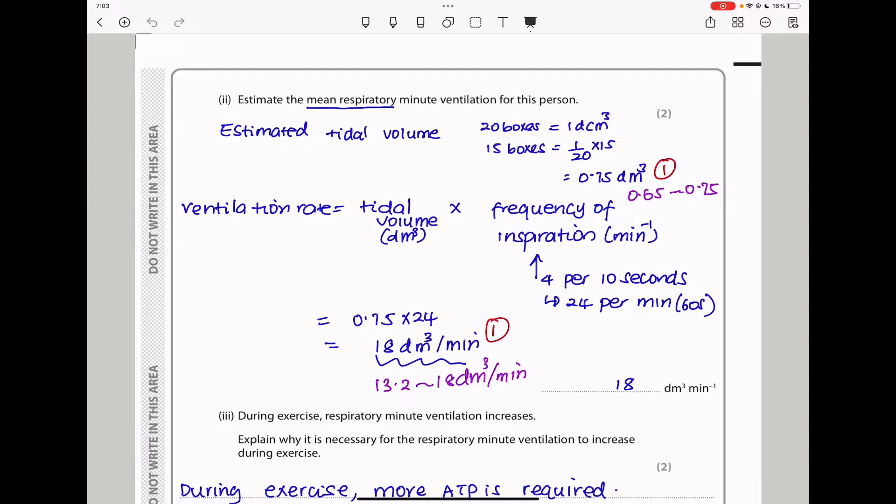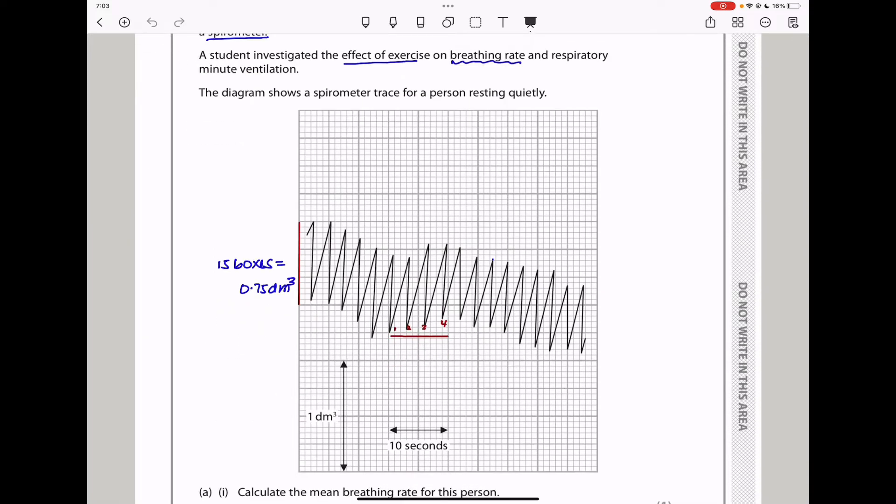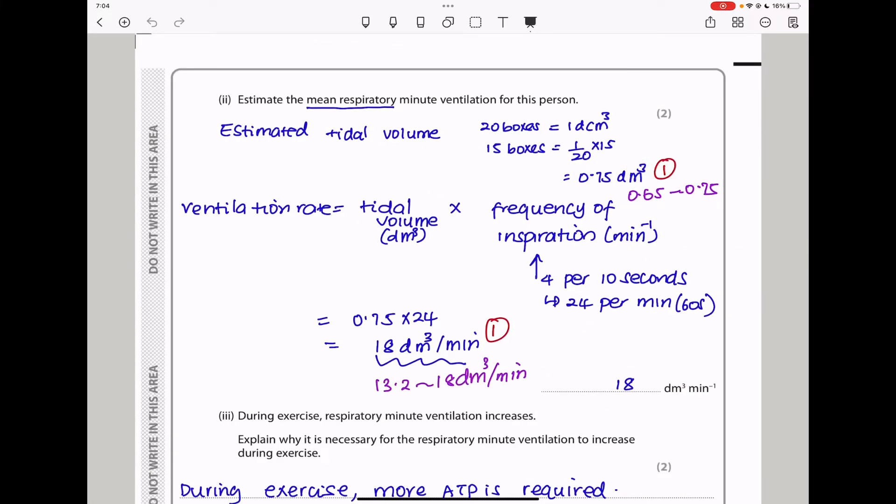Here they say, estimate the mean respiratory minute ventilation for this person. Ventilation rate is equal to tidal volume in decimeters cubed times frequency of inspiration, that is per minute. I had to calculate the tidal volume, which I did using the graph here. I use this scale here. We can see vertically 20 small squares represent one decimeter cubed. And since these are 15, 15 are going to represent 0.75 decimeters cubed. So my answer is about 0.75 decimeters cubed. The acceptable answer should be between that and that. The next part was frequency of inspiration, which I have as 24 per minute. So my answer was 0.75 times 24, which gave me 18 decimeters cubed per minute. The acceptable answer here is between 13.2 to 18 decimeter cubed per minute.